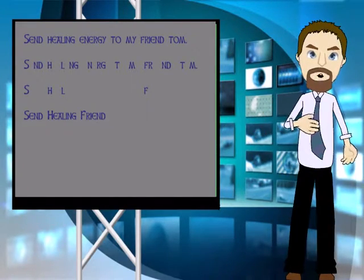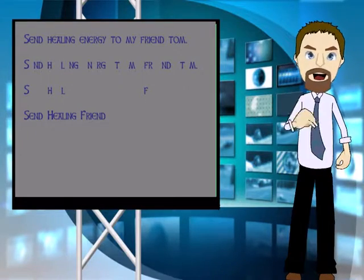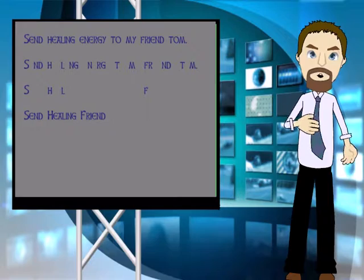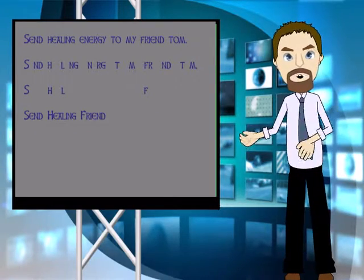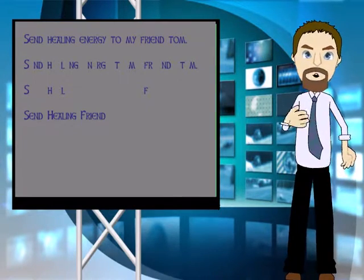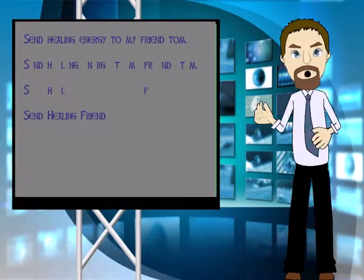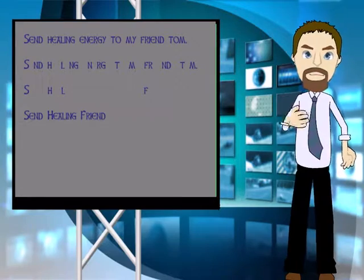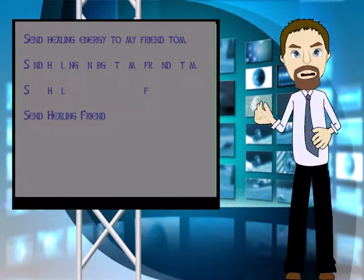Now the next step they say is to take out all the vowels. And as you can see in the second line, that's what I did. Now in the third line, you'll see there's only four letters left because we are supposed to remove all repeating letters. And this is where I have a problem.